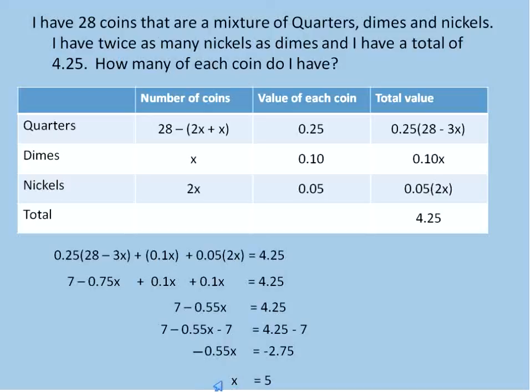Now what does that mean? That means the total number of dimes is 5. Because x is the number of dimes, if you look back at the table you'll see that. So we have 5 dimes. Now I'm going to solve for the number of nickels. The number of nickels is 2 times x, or 2 times 5. So that's the number of nickels I have, and 2 times 5 equals 10.